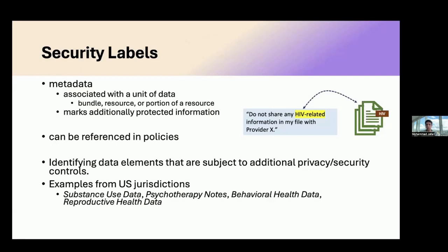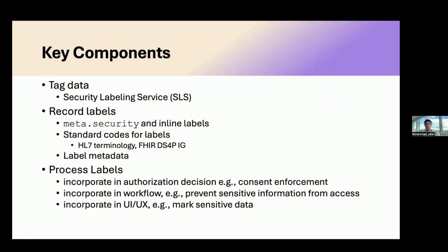Examples in the US jurisdiction — I think the oldest one is substance use data, which has been around for almost 40 years — and there are new emerging types of sensitive information depending on the cultural landscape and consumer expectations of privacy. These categories could be variable and could change. The key components in a labeling or data segmentation ecosystem: first is the tagging of data, where a security labeling service assigns labels to data elements, resources, bundles, or at element level. Labels are recorded in meta.security in FHIR at the resource level, or as inline labels for portion labeling.